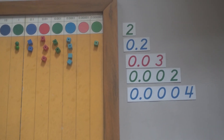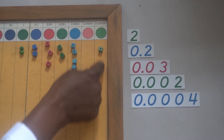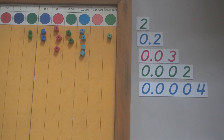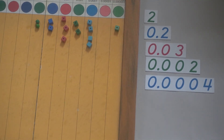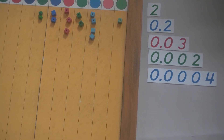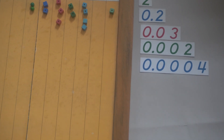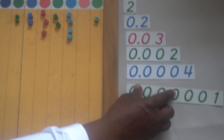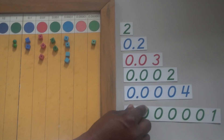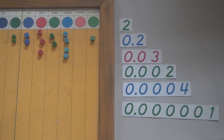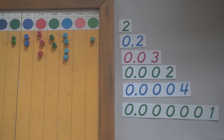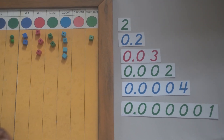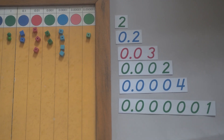Now in the millionths category we have one millionth, so I'll go to the millionths category and take one millionth card. Now let's put our cards together — you remember the magic slide.